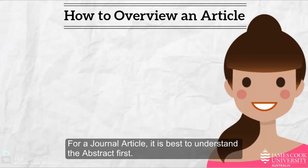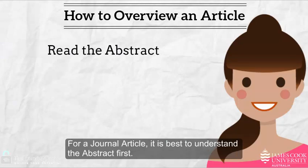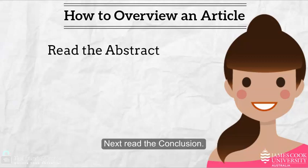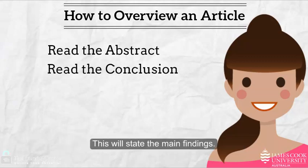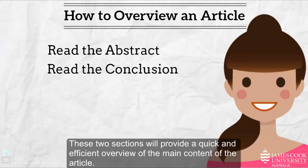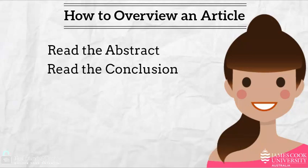For a journal article, it is best to understand the abstract first. This provides the main overview of the article. Next, read the conclusion. This will state the main findings. These two sections will provide a quick and efficient overview of the main content of the article.